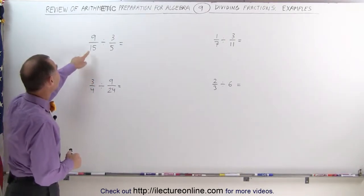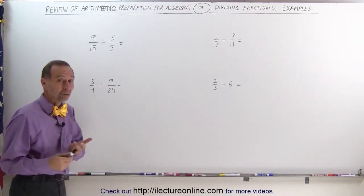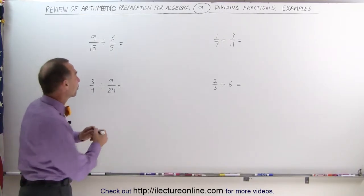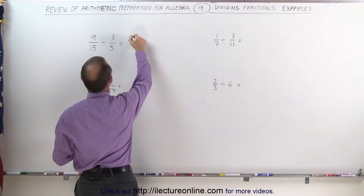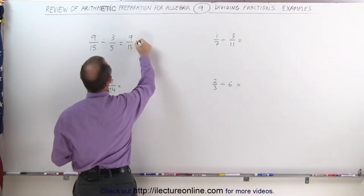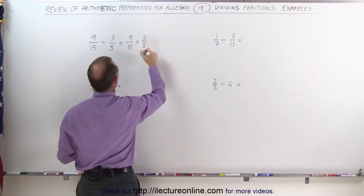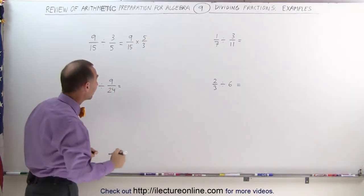The first one is 9/15 divided by 3/5. Again, the rule is when you divide by a fraction, it's the same as multiplying by its inverse, so this becomes 9/15 multiplied times the inverse of 3/5, which is 5/3. All you do is simply flip the fraction around.